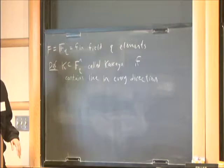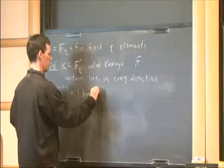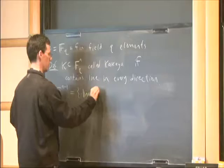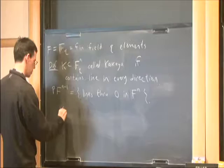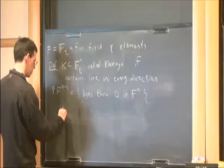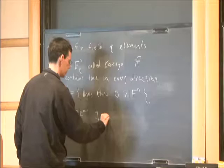To make sure it's clear, if I look at the projective space PF^{N-1}, this is defined to be the set of lines through the origin in F^N. And by a line in every direction, I mean that for every L in the projective space, there should exist some vector V in the vector space so that the translate L plus V is contained in the set K. That's what it means to be a Kakeya set.